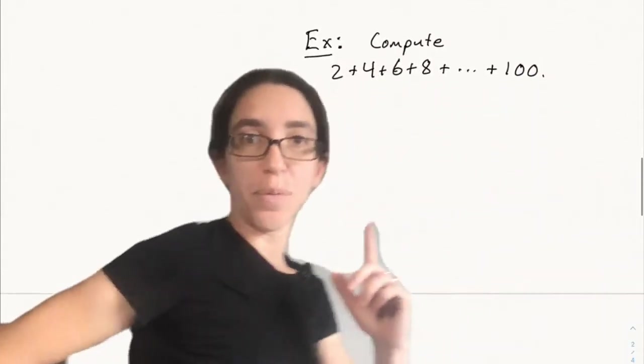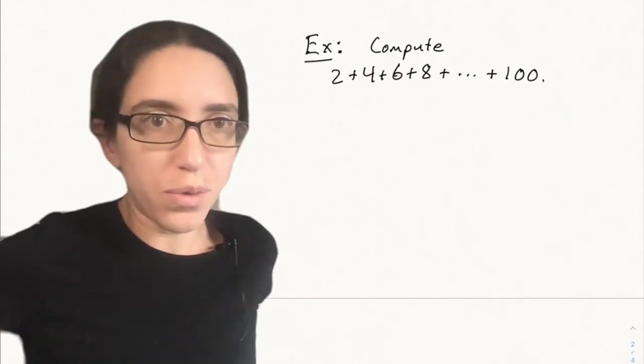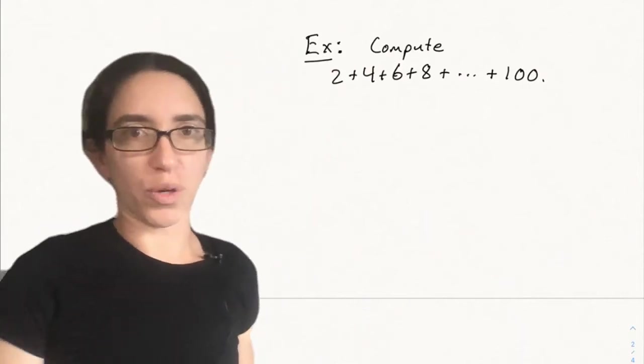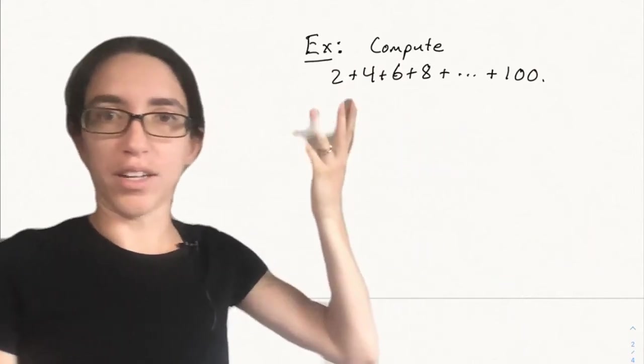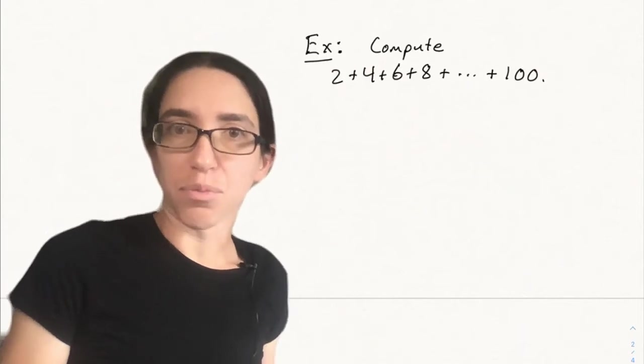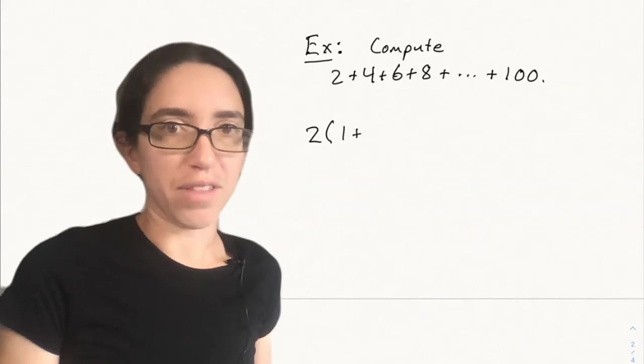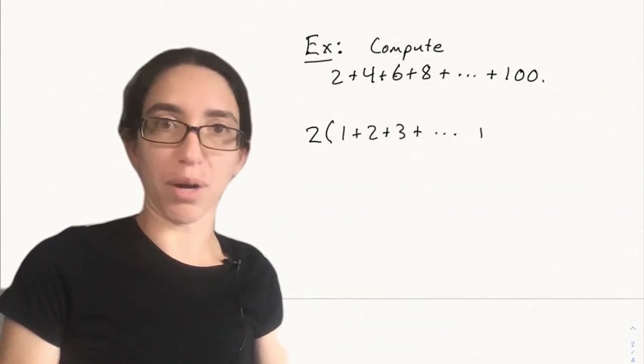Here's another example of something fun you can do with Gauss's formula. You can compute other sums of other large sequences besides just adding the numbers from one to N. For instance, say we wanted to add the even numbers between two and 100. Well, it might look like it's a completely different problem at first, but when you look at it, you realize we can factor a two out of that entire sum and turn it back into a triangular number problem.